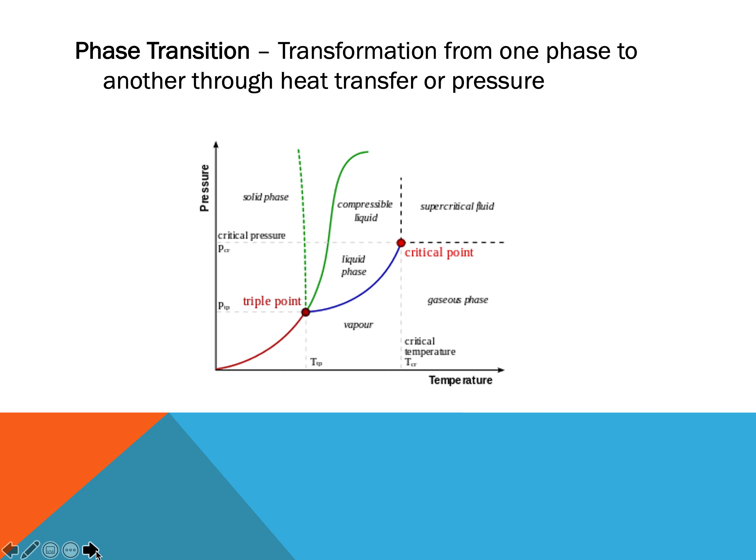Now, my last definition we're going to look at right now is phase transitions. So that is just the transformation from one phase to another through heat transfer or pressure. So every substance has these different points where when we raise them to a certain temperature, you can see right here the temperature is increasing on this graph. So I might start in the solid phase, and then as I increase my temperature, eventually I'm going to move into my liquid phase. And if I keep increasing my temperature, I'm going to move to the gas phase.